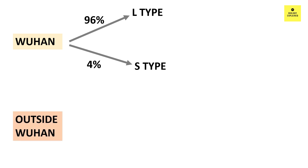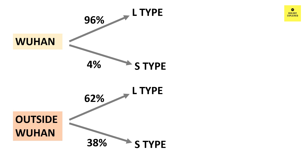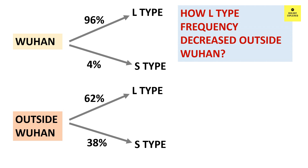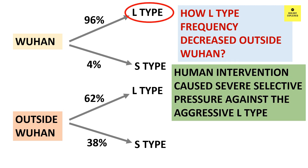However, outside Wuhan, 62% were L-type and 38% were S-type. This comparison suggests that L-type was more prevalent in Wuhan compared to the rest of the world. The authors addressed the question of why L-type frequency decreased outside Wuhan — the probable answer is that Chinese central and local governments took rapid and comprehensive prevention and control measures, causing severe selective pressure against the aggressive L-type.